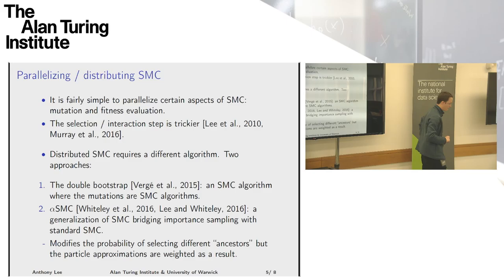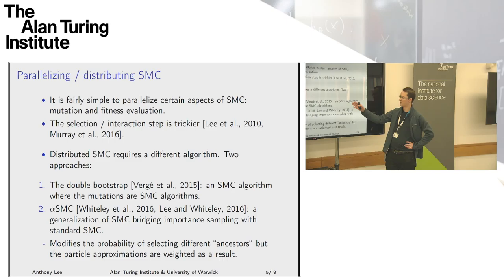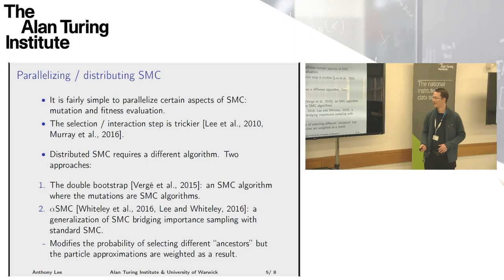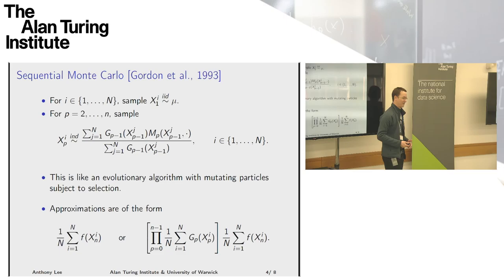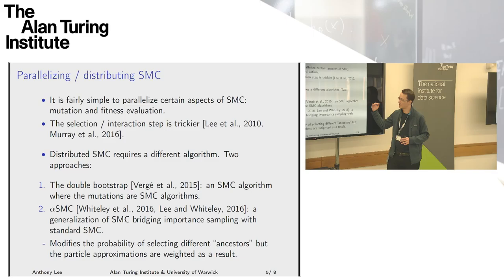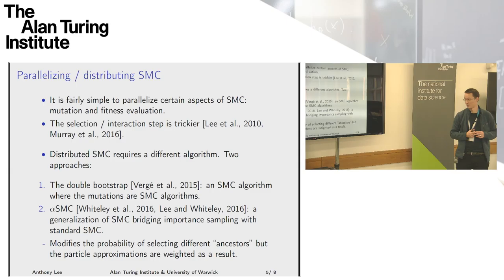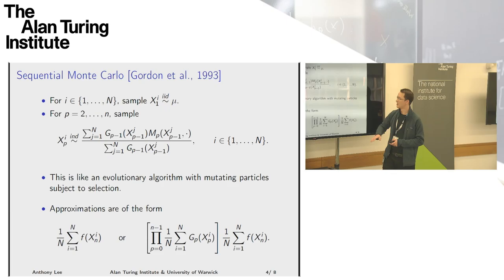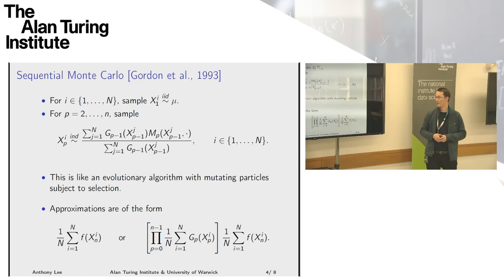When it comes to distributed SMC, there are some people who have worked on nice approaches. One particularly elegant approach is called the double bootstrap. Basically it involves running an SMC algorithm where those mutations are themselves SMC algorithms. There's some nice math behind it — you can actually make M an SMC algorithm itself. A second approach is to try and form a bridge. This is with my collaborator Nick Whiteley and Carrie Hine for the first paper. You kind of build a bridge between a simpler type of Monte Carlo scheme like importance sampling and sequential Monte Carlo, which involves all of this interaction.